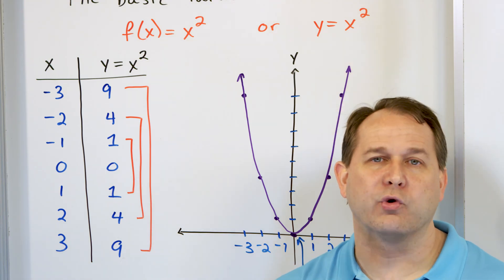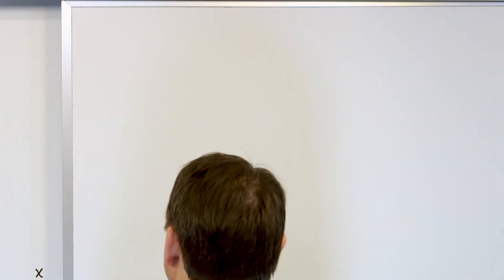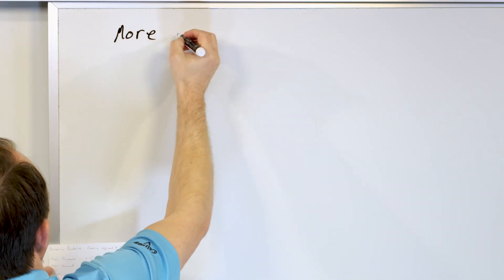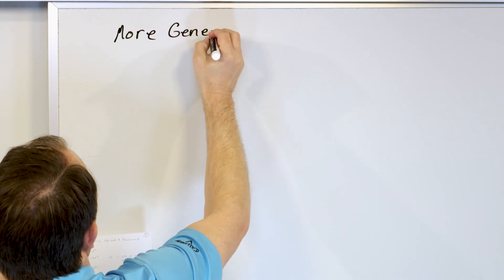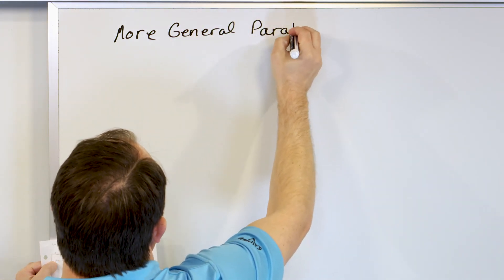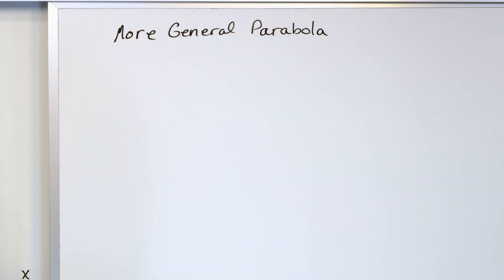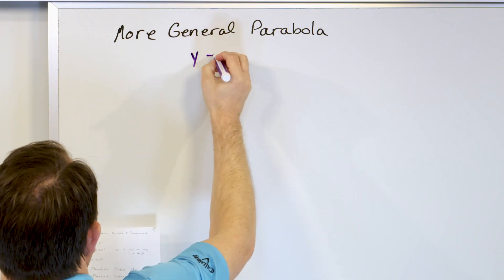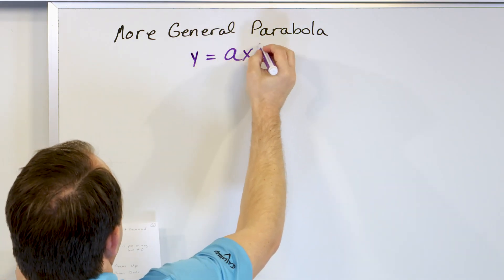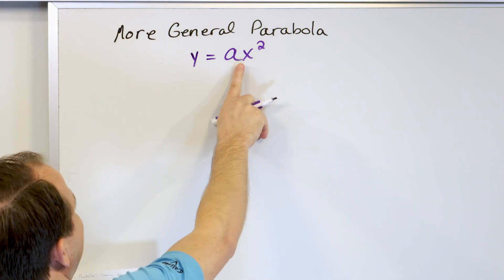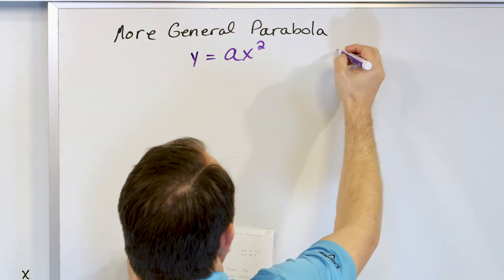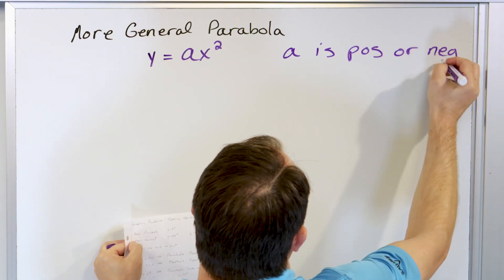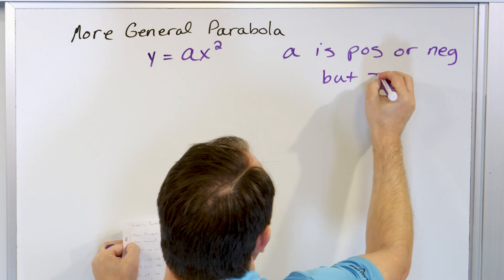Let's talk about a more general form of the parabola. The more general form is y equals a times x squared. The only thing we've done is added a coefficient called a in front of the x squared.